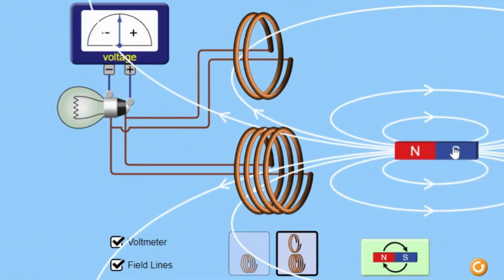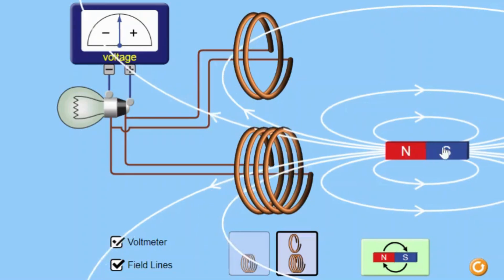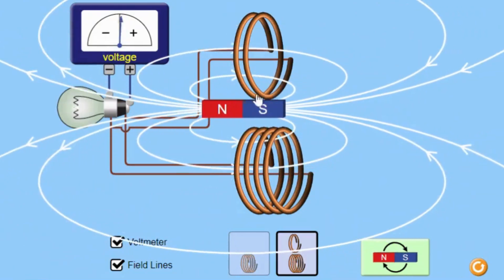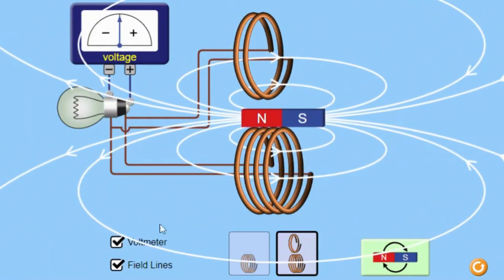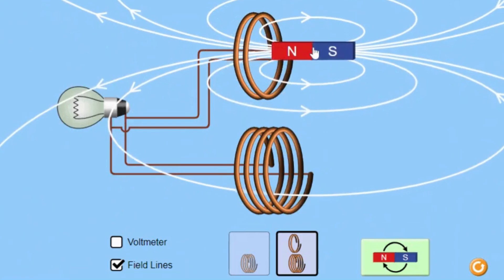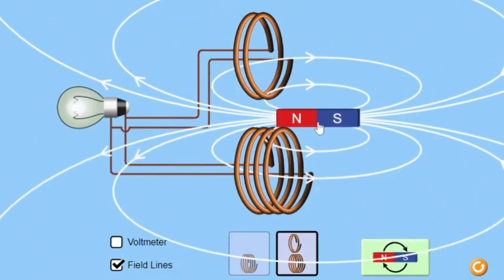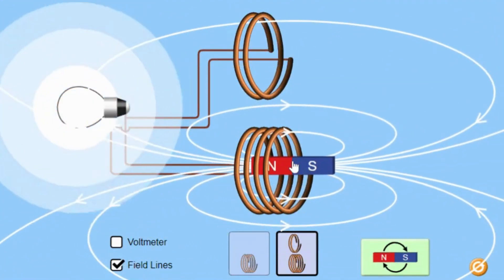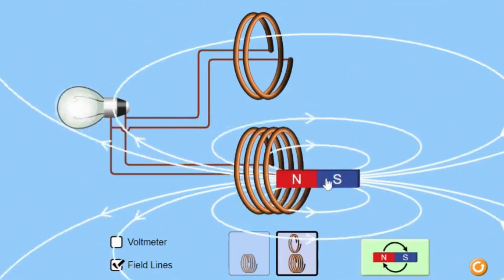The simulation introduces students to the process of data collection and analysis. By observing the brightness of the bulb and recording the changes in induced EMF, students can collect data and analyze the relationship between the number of coil turns, magnet speed, and induced EMF.